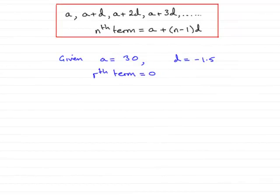Now, in this part of the question, remember we're given that the first term is 30 for this arithmetic sequence, and the common difference is minus 1.5, and now we're told that the r-th term is equal to zero, and we've got to find the value of r.